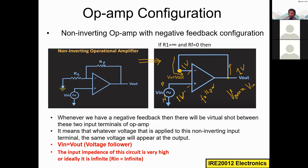Whatever input voltage I apply, the same voltage appears at the output. You might ask whether VD equals V1 minus V2 and if it will be zero — but that does not happen here. This is the special property of the voltage follower circuit because there is no grounding. Whatever voltage you apply appears at the output; the output follows the input voltage.